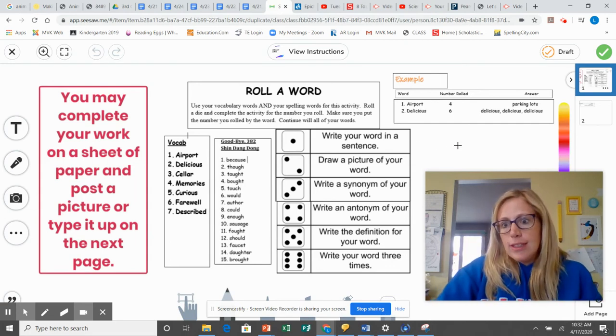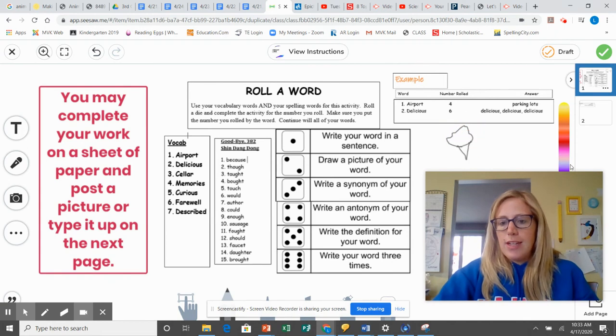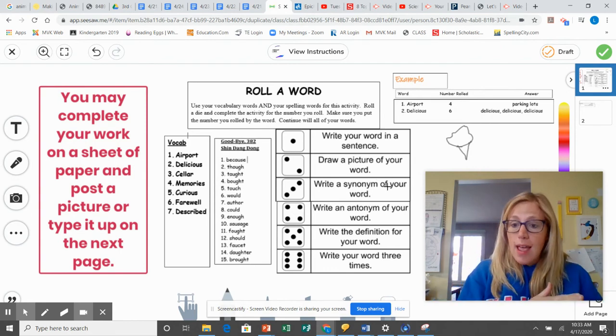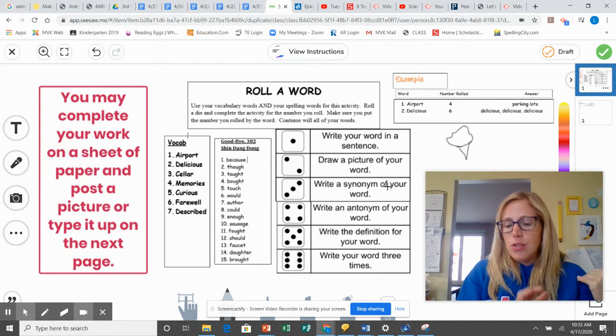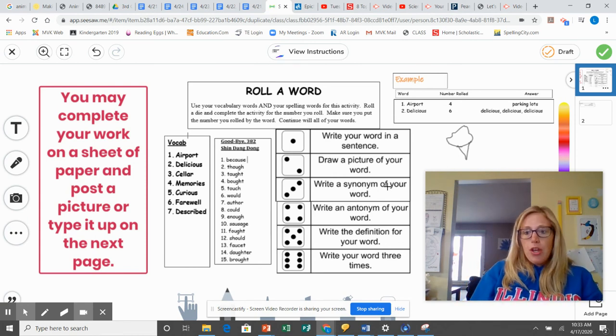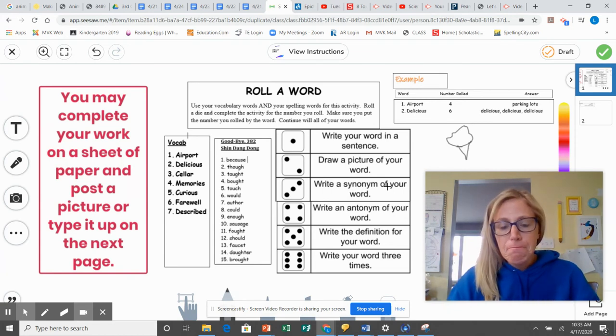So if I had to draw delicious, I might draw my picture. This is what I put for delicious ice cream. Okay. Synonym means the same thing. You can go back into that PowerPoint to help you. If you need to, you can go online to a thesaurus and try to find words that mean the same thing. Again, not every word has a perfect synonym. You have to think sometimes like of an example instead or roll again if you don't know it.